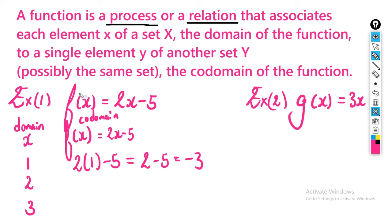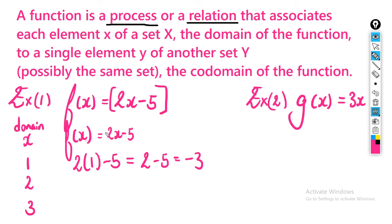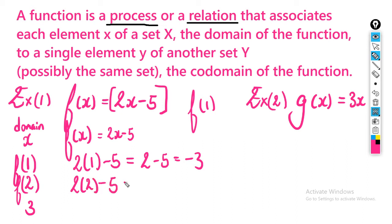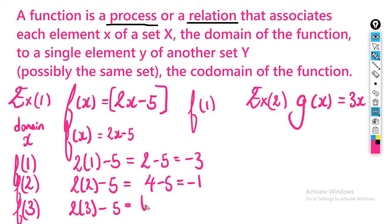All we're doing is substituting the number into the equation. For f(2): 2 times 2 minus 5 gives 4 minus 5, which is negative 1. And for f(3): 2 times 3 minus 5 gives 6 minus 5, which is 1. Really simple.